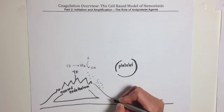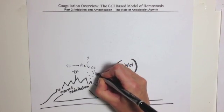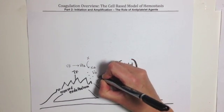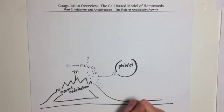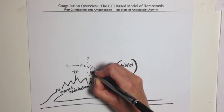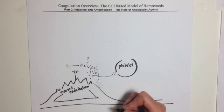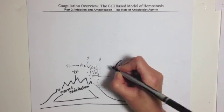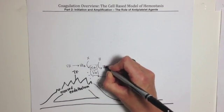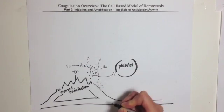Factor Xa then joins with activated Va that has been released and activated by the recruited platelets to the area. This forms a small amount of an enzyme complex known as prothrombinase because it converts the enzyme prothrombin to the critical factor in the entire cell-based model, thrombin.